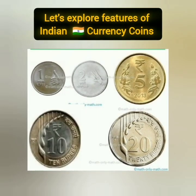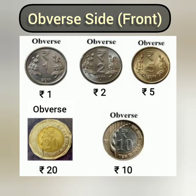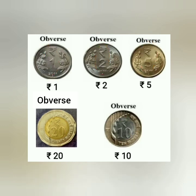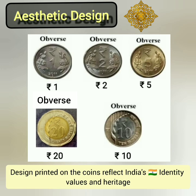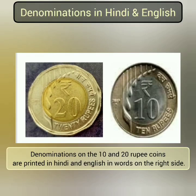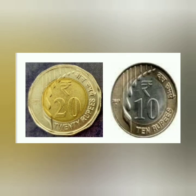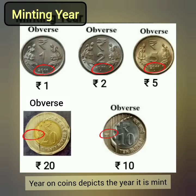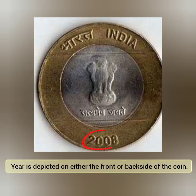Now let's explore features of Indian currency coins. Obverse side: all coins display denominations with the Indian rupee symbol. The aesthetic design printed on the coins reflects India's identity, values and heritage. Denominations on the 10 and 20 rupee coins are printed in Hindi and English in words on the right side. The minting year on coins depicts the year it was minted, depicted on either the front or back side of the coin.